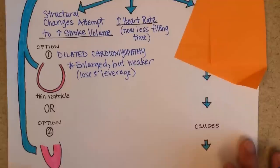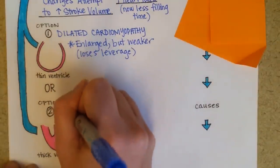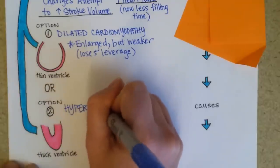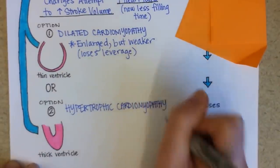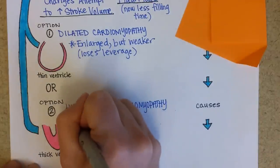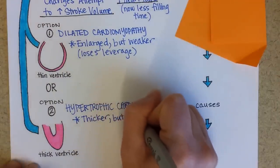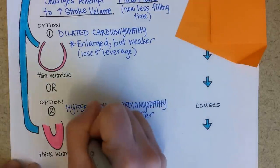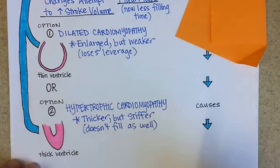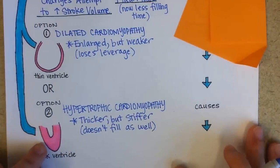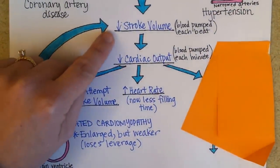Another change in the heart muscle during congestive heart failure is a thickening of the ventricle wall. We call this hypertrophic cardiomyopathy. In this situation, the walls are getting thicker, trying to pump more blood, but they're getting stiffer as well, and there's less room for blood. So they don't fill the way a healthy heart should. Although the ventricle is trying to pump more blood, it's actually not succeeding, and we have a progressive drop in stroke volume.